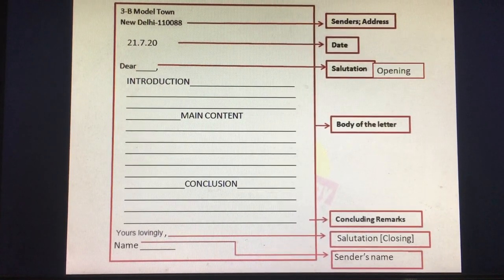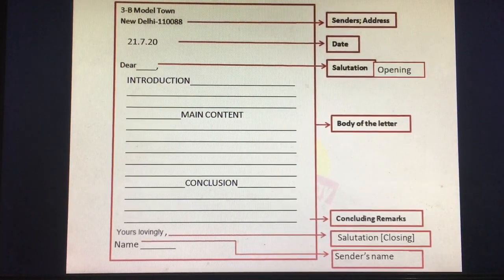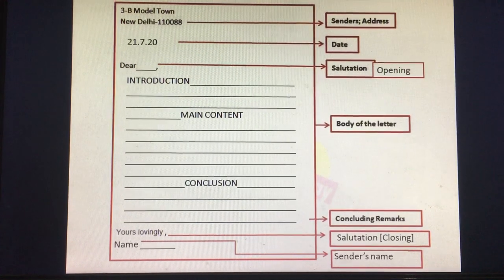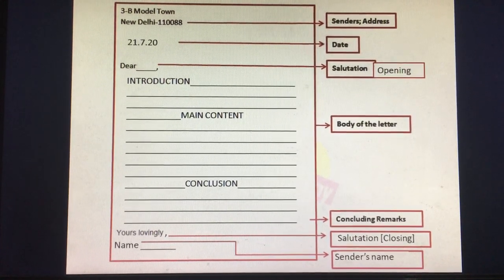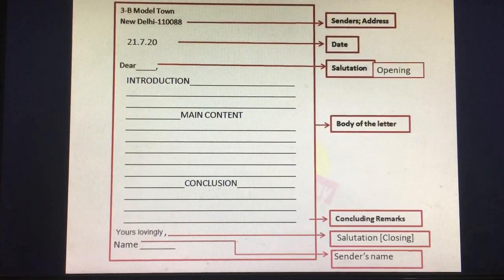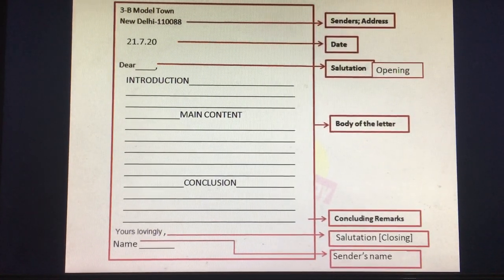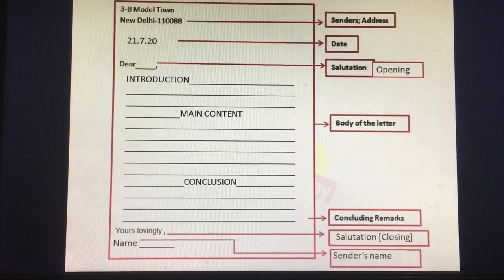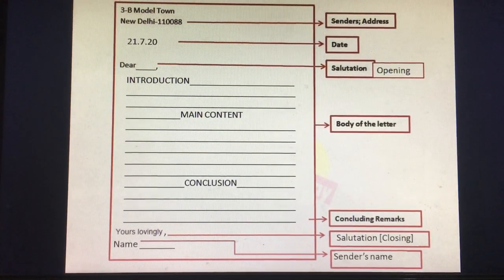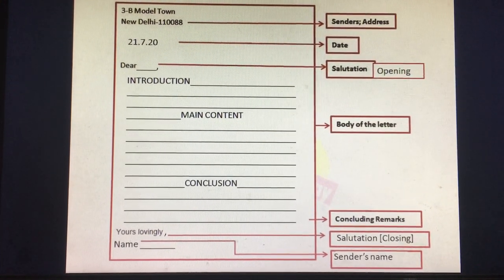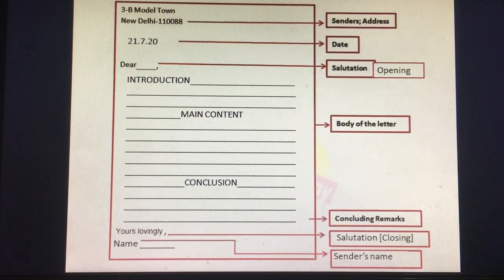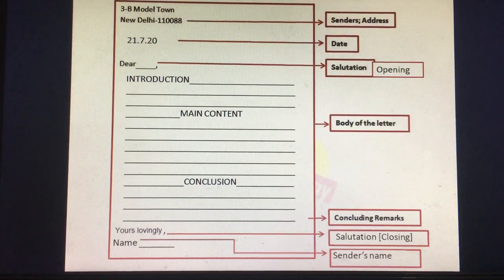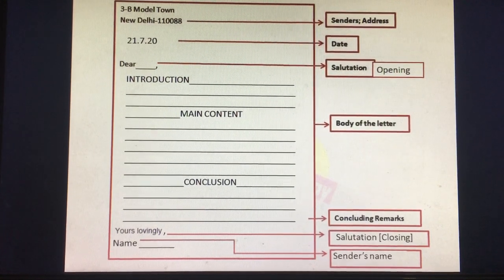Your address may be from Kolkata, Delhi, Mumbai, Chennai, or any place. Now comes the date. Leave one line and then give the date. For example, I have given the date as 21/7/20. Write in this manner.